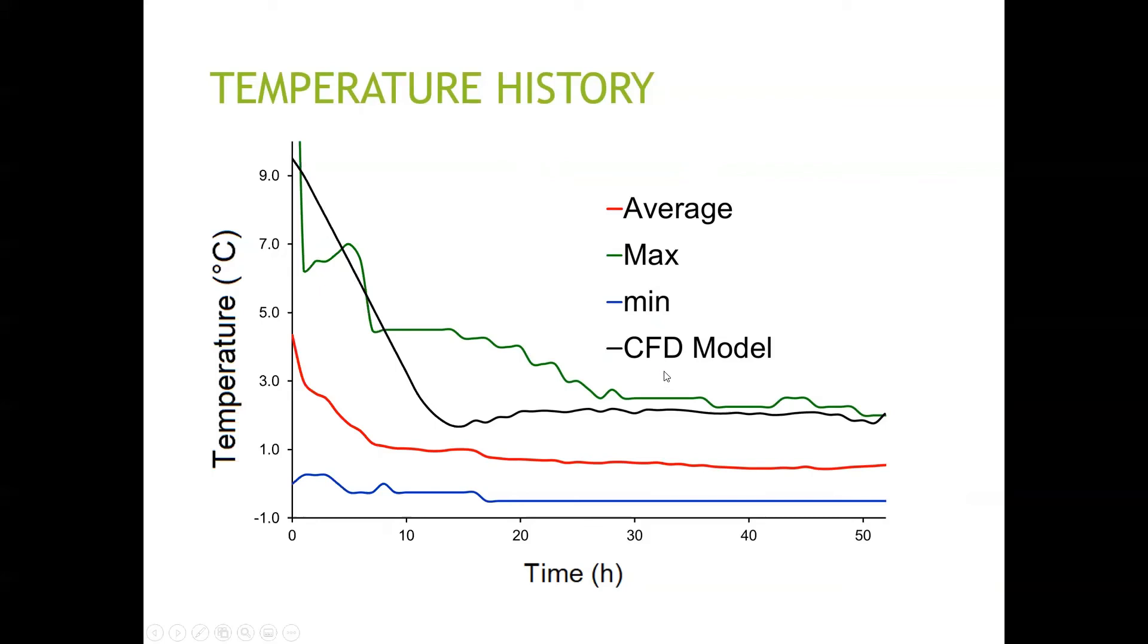And as you see here, the temperature predicted by the CFD model is significantly higher than the average observed inside the container as given by the cloud system, but it's still lower than the maximum observed. And that gives us hope that the system may indeed be capable to cool down the fruit from 5 degrees Celsius that we will test in the coming weeks.